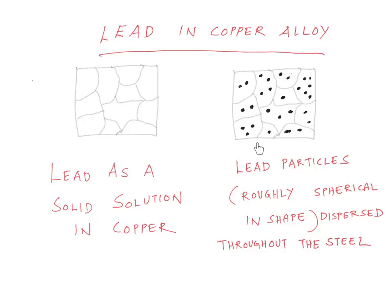The first phase is a small amount of lead in solid solution in copper. The second phase is these lead particles which I have shown in dark color, which are roughly spherical in shape, dispersed throughout the microstructure.